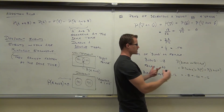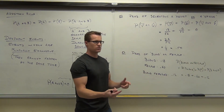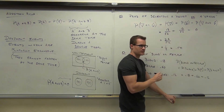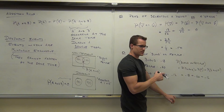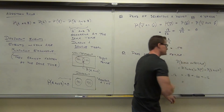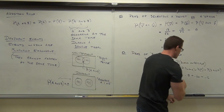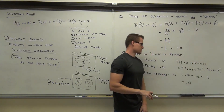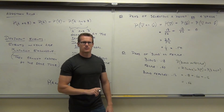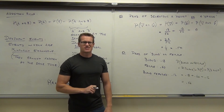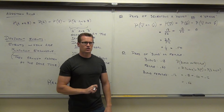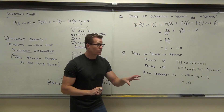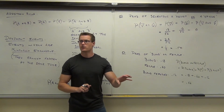So we add the .18 to the .60, we subtract the .12, and we get .66. 66% — 66% chance that you're going to randomly select... blonde or female? Is it a blonde female? No, it's a blonde or a female.